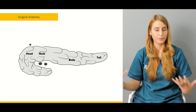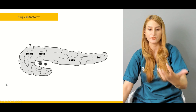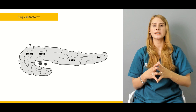Another diagram summarizes the different parts of the pancreas: the uncinate process extends downward and is related to the superior mesenteric vein; then comes the head, neck, body, and tail of the pancreas.